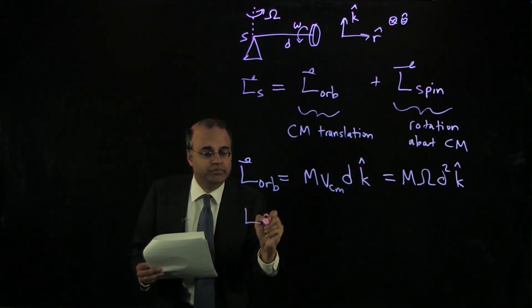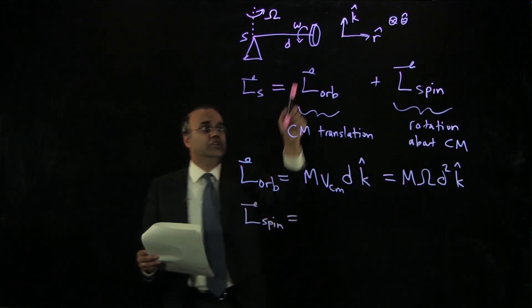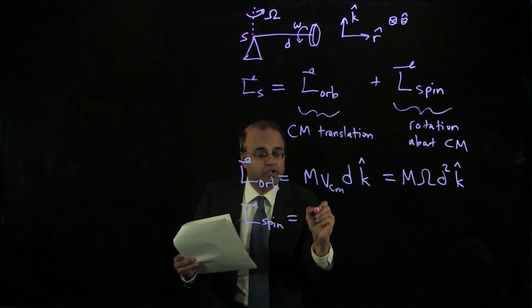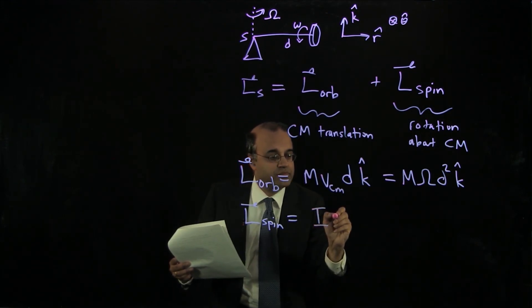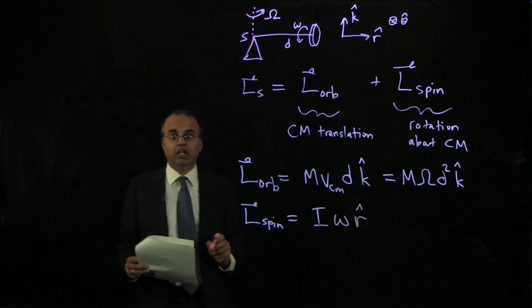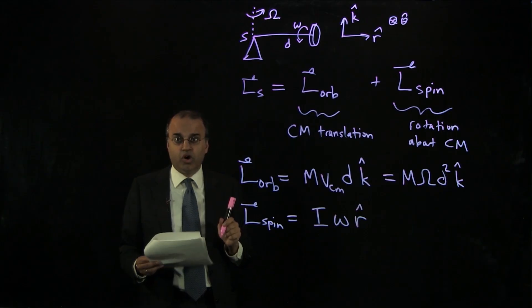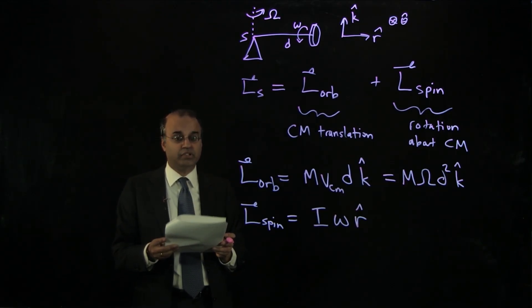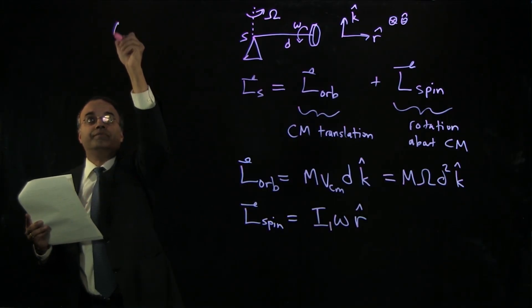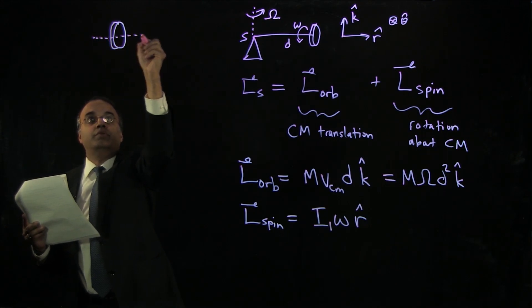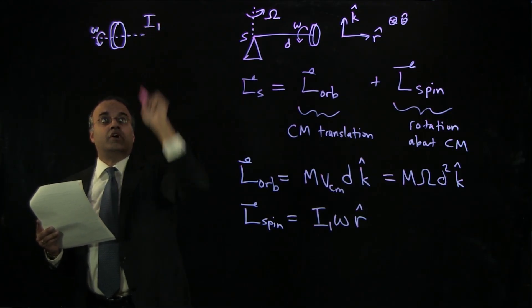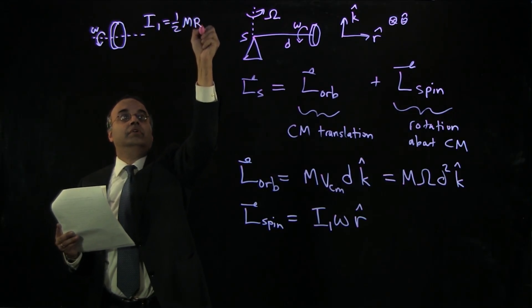The spin angular momentum is due to the rapid spin of the wheel around its axis, given by the moment of inertia about that axis, I1, times the spin angular velocity little omega, pointing in the r-hat direction. For a disk, I1 equals one-half m r squared. But there's a subtlety: this is not the only rotation about the center of mass that the wheel is undergoing.